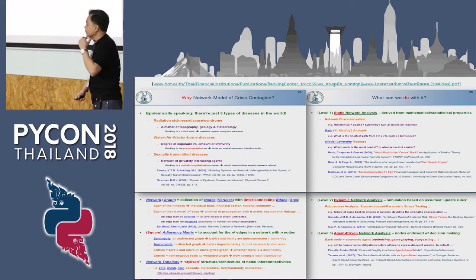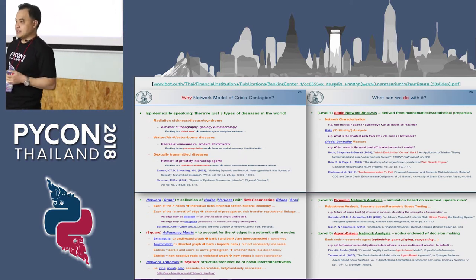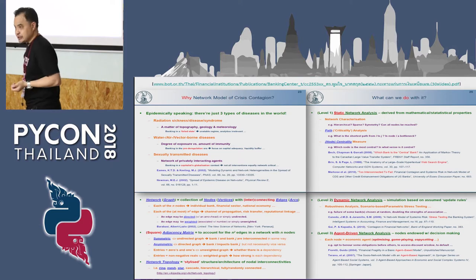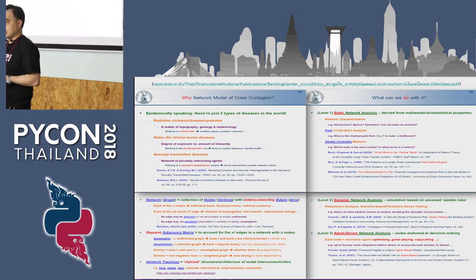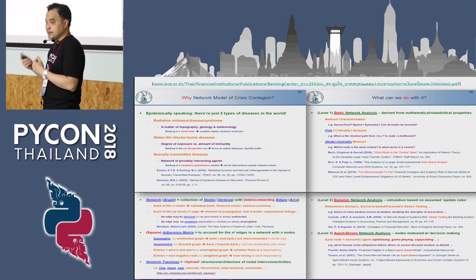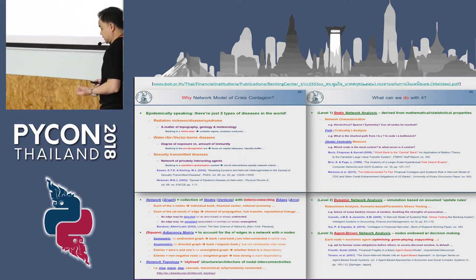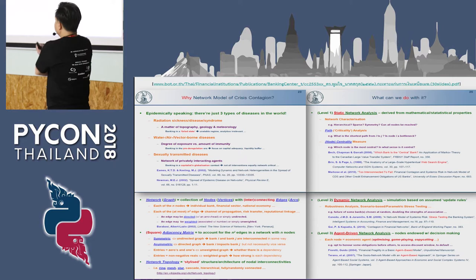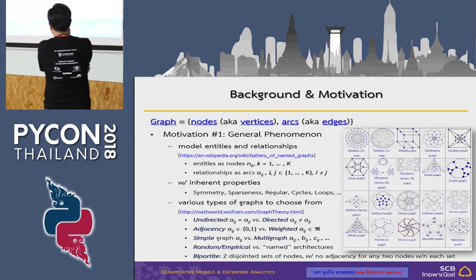This is based on my old work I did for the central bank. Basically, there are three levels of network analysis. If you're interested, we can come back to this in Q&A.